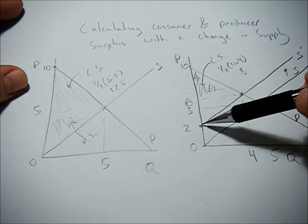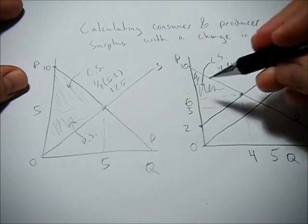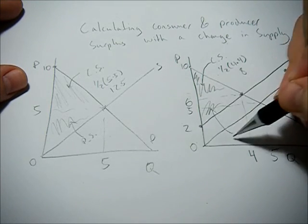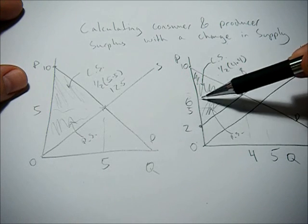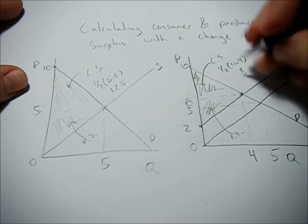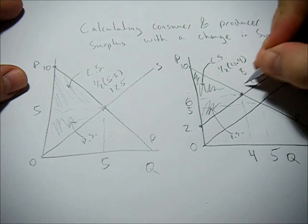Our producer surplus is above the supply curve and below price. So base, 4, height, 4 as well, times a half is going to give us 8.